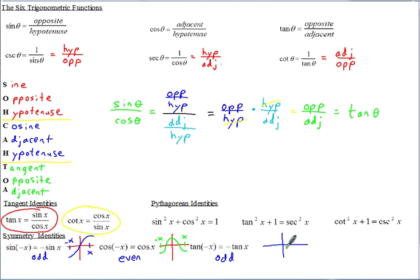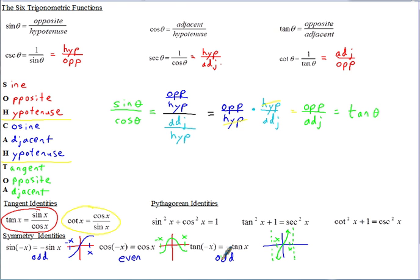With the graph of tangent, it has asymptotes at negative pi over 2 and pi over 2. You can see that if you plug in x versus negative x, the result is the opposite, just like sine.